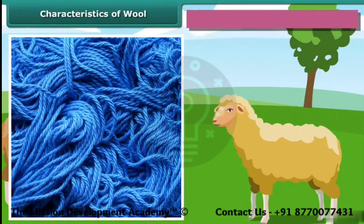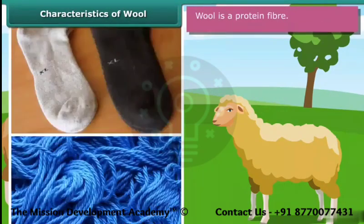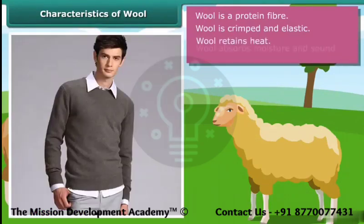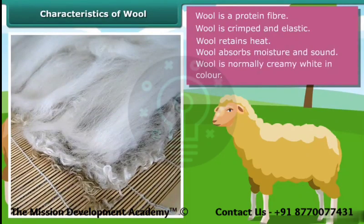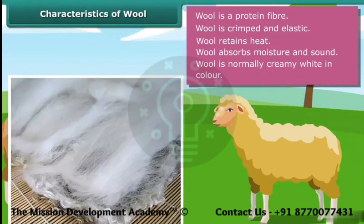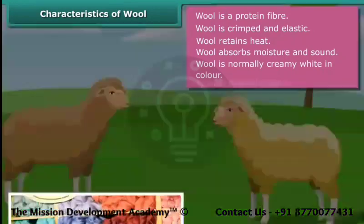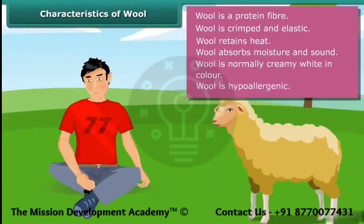Wool is a protein fiber. It is crimped and elastic. Crimp makes wool bulky and helps it retain heat. Wool absorbs moisture and sound because it is hollow. Wool is normally creamy white in color, but it can also be black, brown, or silver. Wool is hypoallergenic — in other words, it causes fewer allergies in human beings.